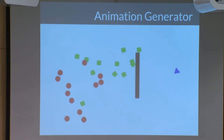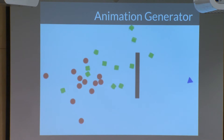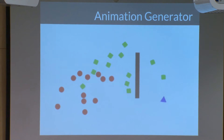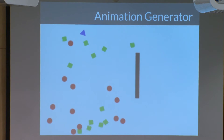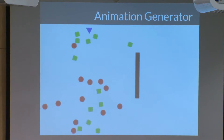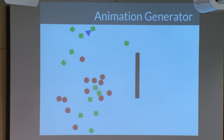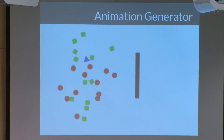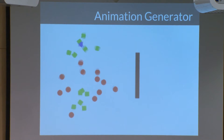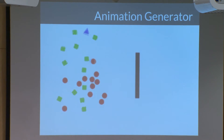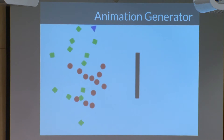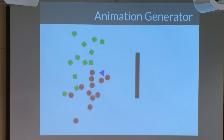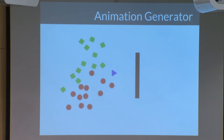For example, in this one, the green squares are chasing the blue triangle, and the red circles are attempting to collect around a point near the middle of the screen. The applications of this animation generator are not limited to just these. Other behaviors are also modeled: two objects may attract one another, they may repulse one another, or they can even be dead in the sense that they have no self-propulsion.